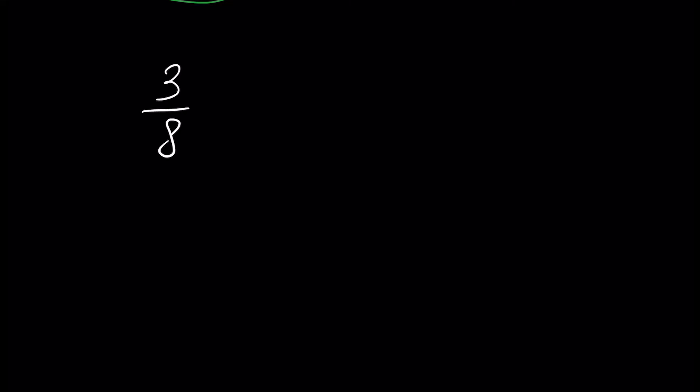Now, in order to compare two fractions with different numerators and denominators, one or both fractions must be transformed so that the denominators are the same. For example, if we have 3 over 8 and 7 over 12, how do we compare these fractions? Because both denominators and numerators are different, we have to transform both fractions so that denominators are equal.